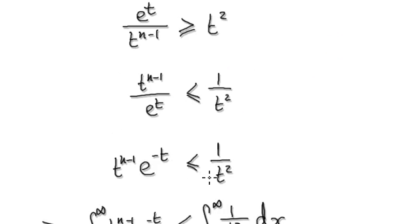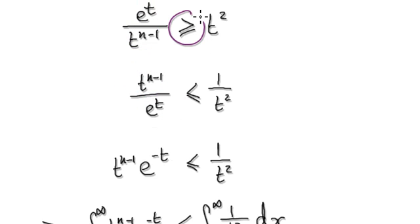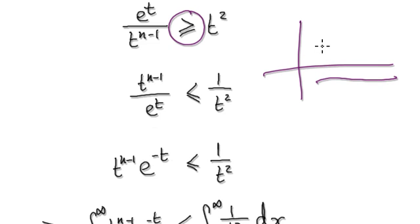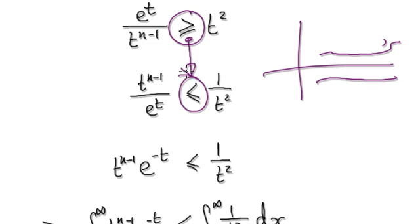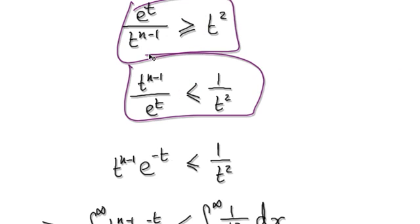Now take the reciprocal of both sides. That will give you this — take the reciprocal of this, so that will turn upside down and give you this. When you take the reciprocal, remember, because t is always in the positive realm — we're always dealing with positive numbers — the two signs will switch over. So from here, that will take us to here.